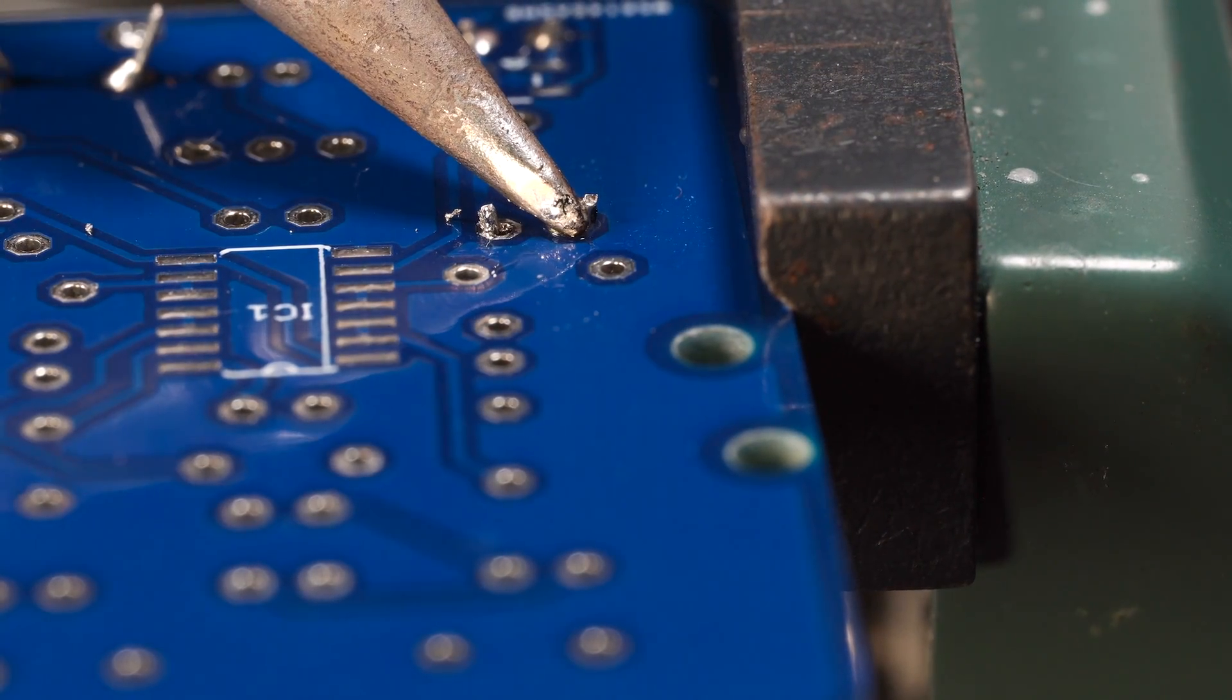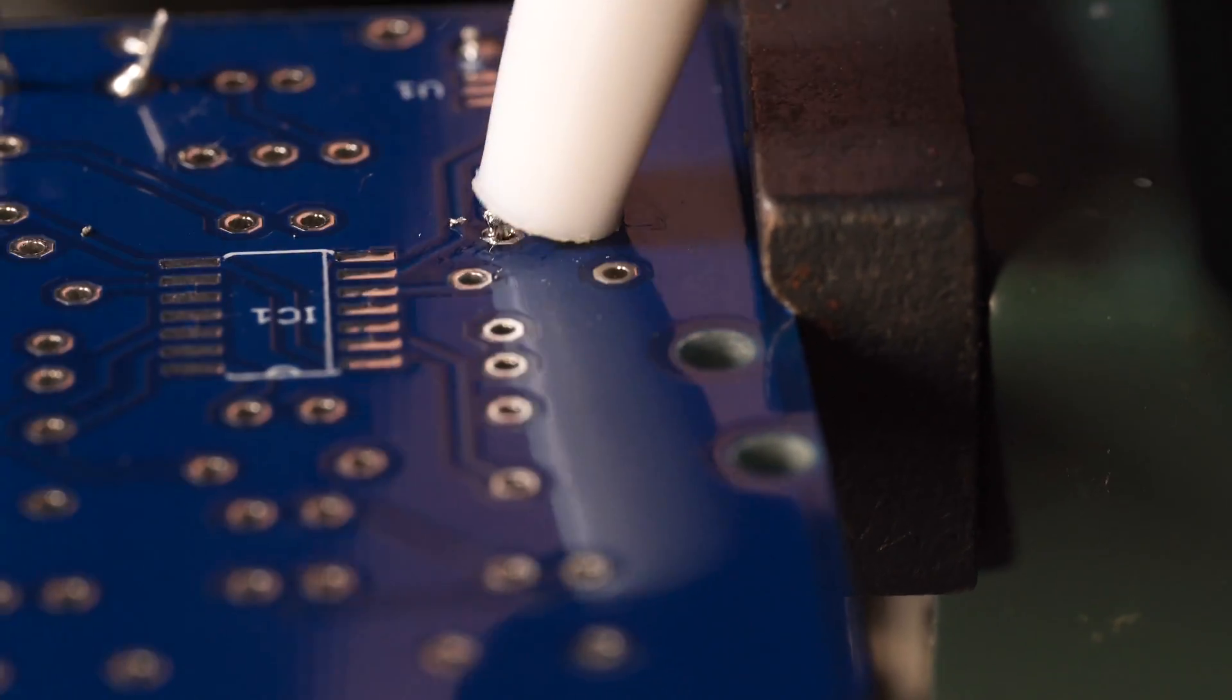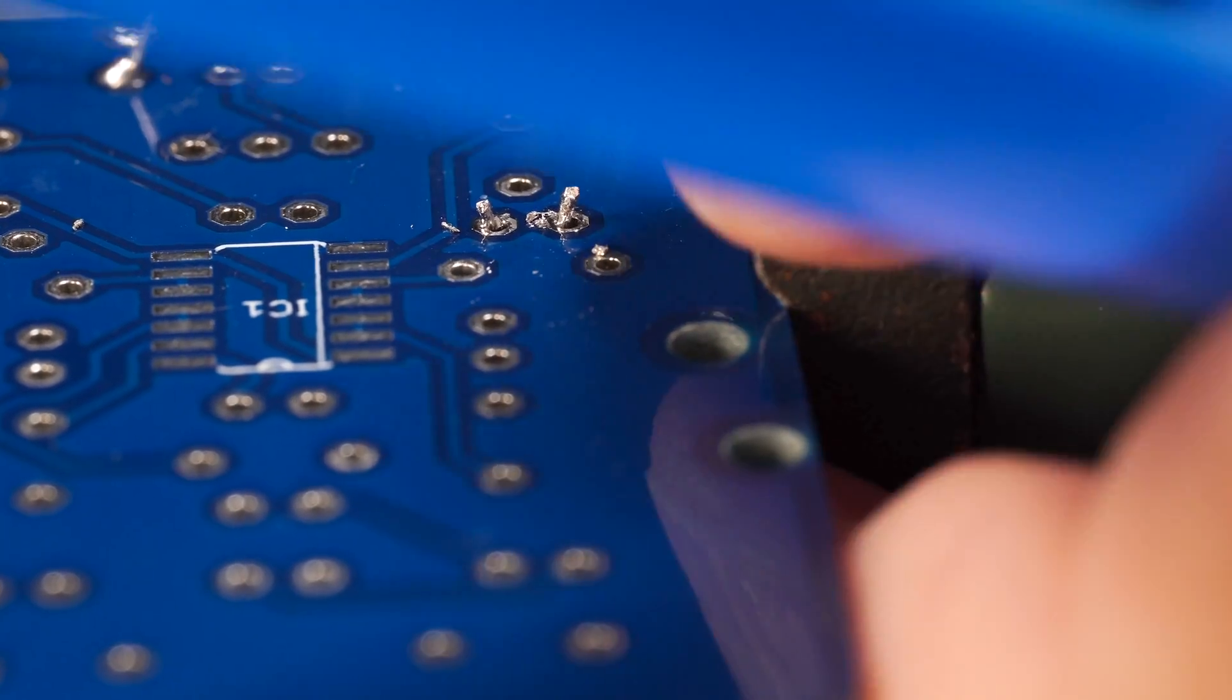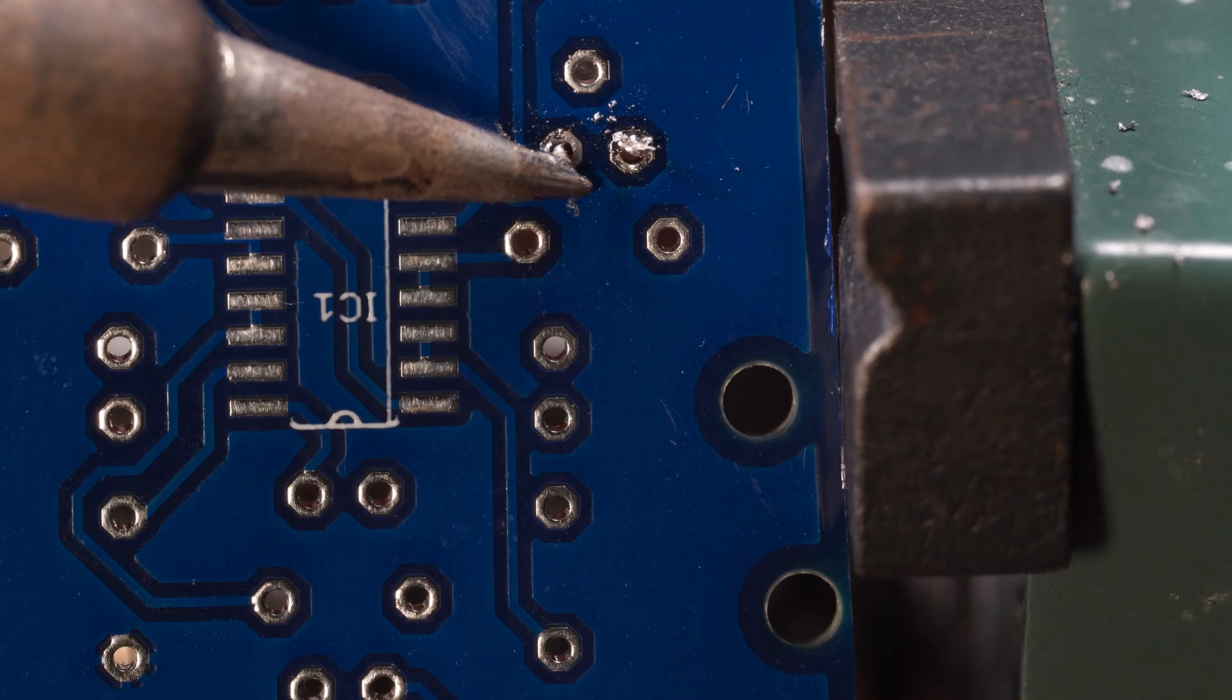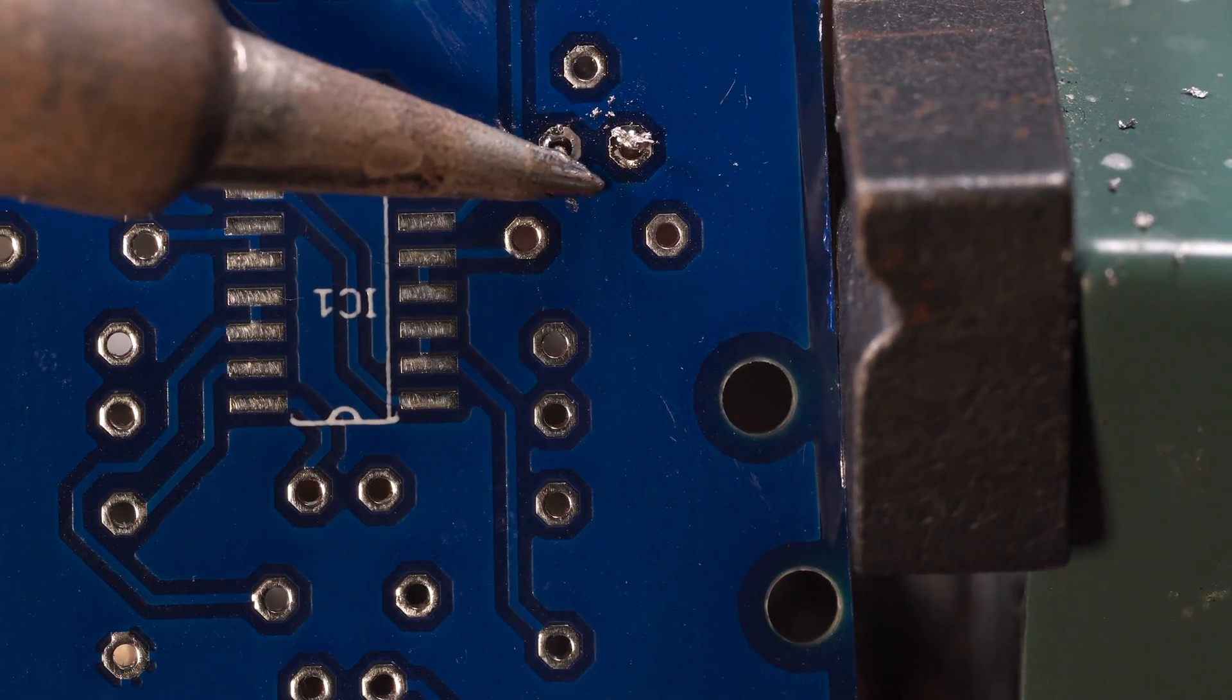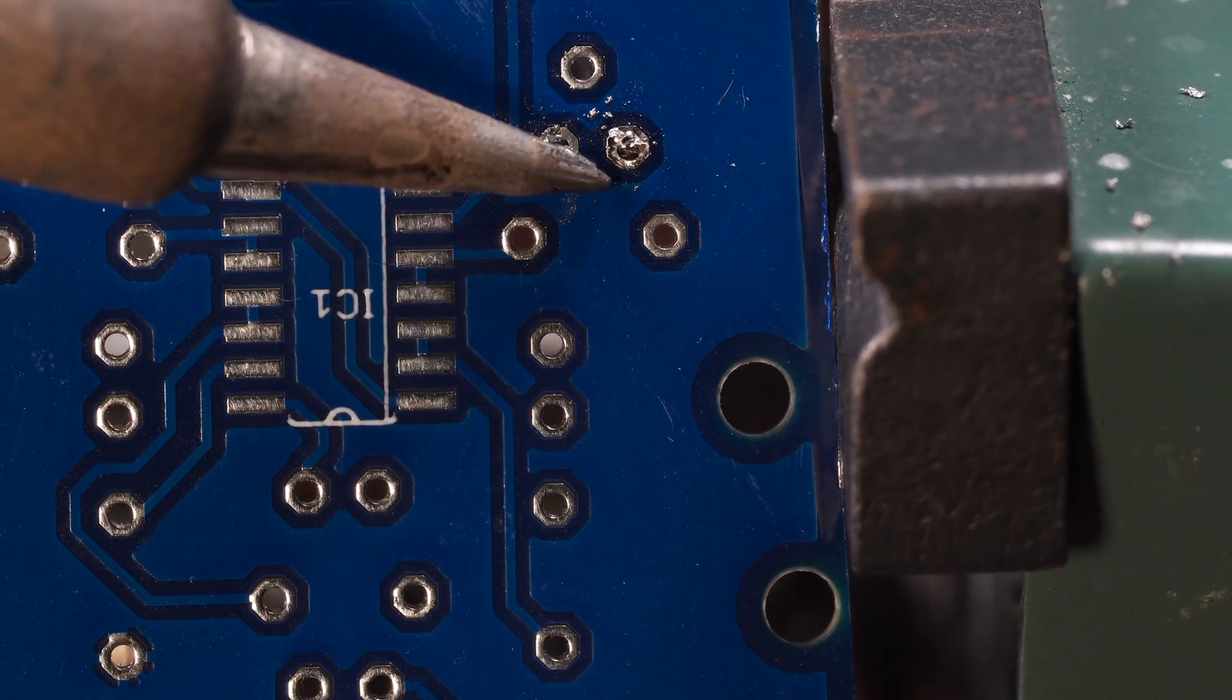Once again, I'm going to heat the component and the pad lead up, and then bring the tip on, press the button, and it sucks it all out. Now, there's still a little bit of thin film of solder holding the components in, so you're going to have to kind of warm them up from the edges with a soldering iron, and then slowly pull them out.